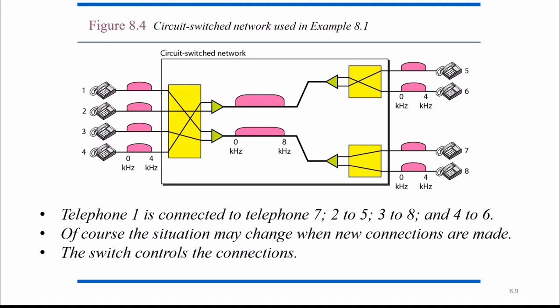In the circuit switch network, eight telephones are there — four on the sender side and four at the receiver side. These four at the receiver side will be able to take data from the four input telephones. They will provide the source side, and there will be the destination side. In between that, there is a circuit switched network.